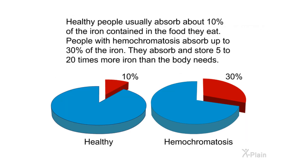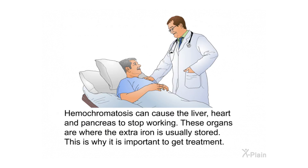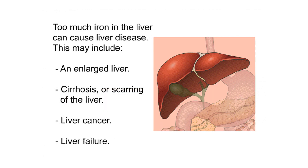Healthy people usually absorb about 10 percent of the iron in the food they eat. People with hemochromatosis absorb up to 30 percent and store five to twenty times more iron than the body needs. Hemochromatosis can cause the liver, heart, and pancreas to stop working, as these organs are where the extra iron is usually stored. Too much iron in the liver can cause liver disease, including an enlarged liver, cirrhosis or scarring of the liver, liver cancer, and liver failure.